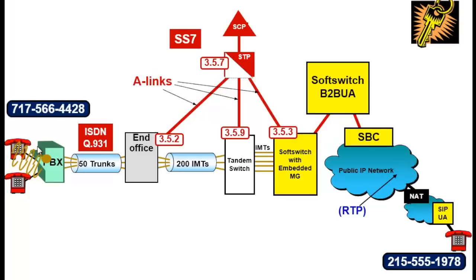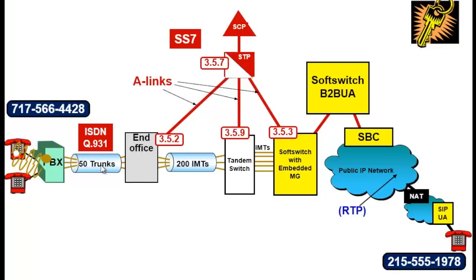So our originating party goes off-hook. We have 30 milliamps of current flowing, and our user dials this phone number that you see over here on the right. So after the digit 9-215-555-1978 is dialed,